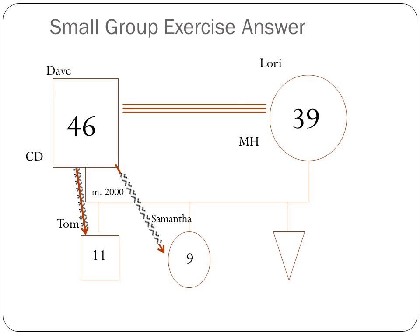The previous scenario also gave us information about abuse. Dave is physically abusive toward the children when he drinks, so we have a line from Dave's square to Tom's square and Samantha's square. The line starts at Dave and the arrow points to Tom and Samantha, indicating they are victims. We have the half triangles — the V's — coming off the solid line to indicate it is physical abuse taking place.